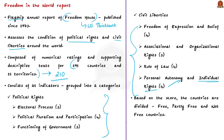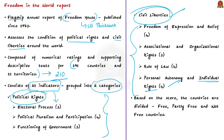The report consists of 25 indicators grouped into two categories: political rights and civil liberties. A country or territory is awarded 0 to 4 points on each of the 25 indicators for a maximum of 100 points. Based on the score, countries are divided into three categories: free, partly free, and not free.